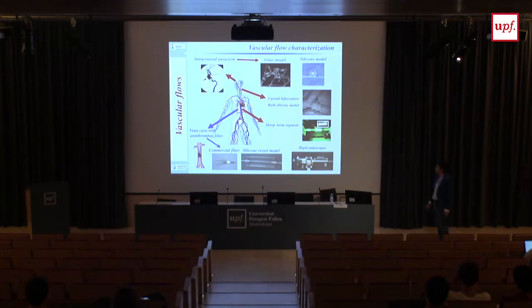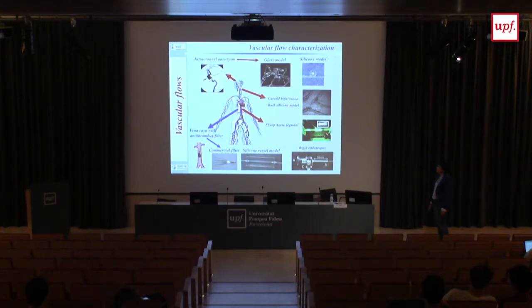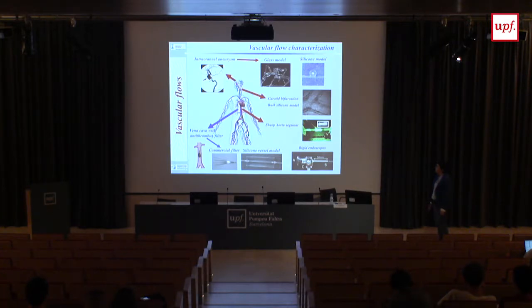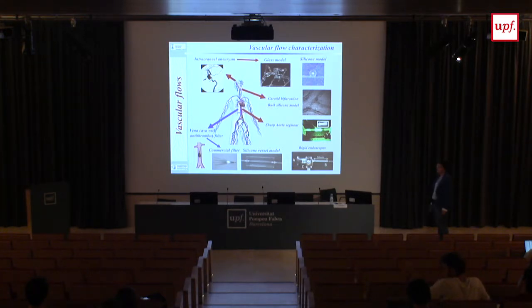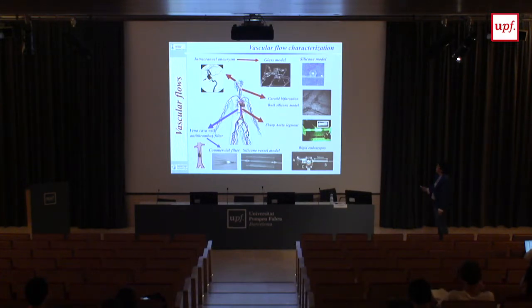We obtained three clinical images of real aneurysms from real patients and built them in glass. We have a glass blower at the University of Zaragoza who was quite good. We also did some models with silicon, which are supposed to be flexible — and they really were flexible. These were built by a company in Switzerland that is very good with this kind of modeling.